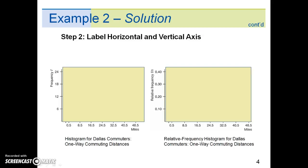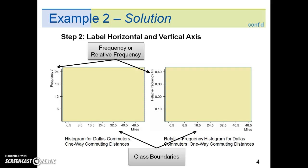In step 2, we label the horizontal and vertical axis. The class boundaries go on the horizontal axis. The frequency or relative frequency goes on the vertical axis.